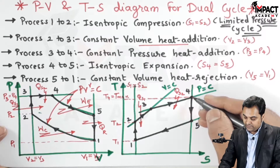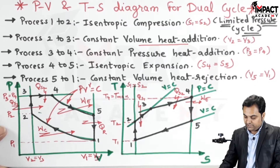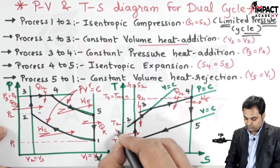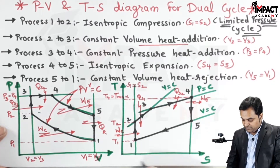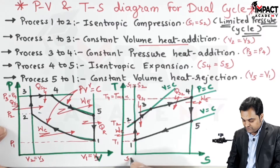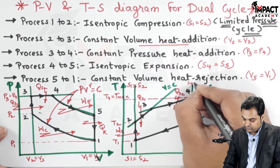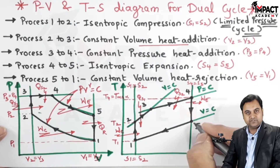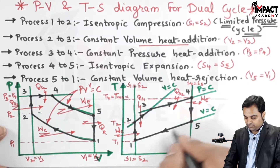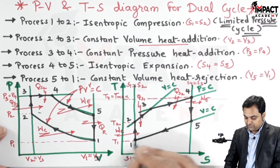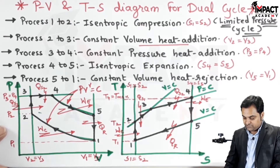During four to five we get the expansion work output, and the compression work input was earlier noted. During four to five the entropy remains constant: s4 is equal to s5 — this is the isentropic expansion process, and the temperature decreases. After reaching point five, the heat rejection starts and continues up to point one. The temperature drops from five to one, and we get heat rejection where heat is rejected to the surrounding atmosphere.